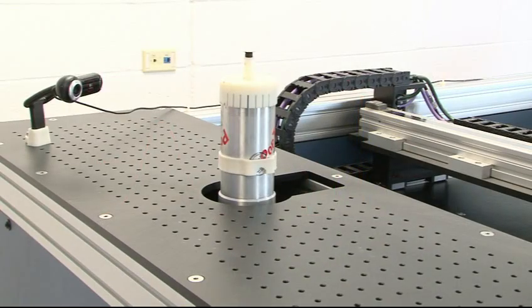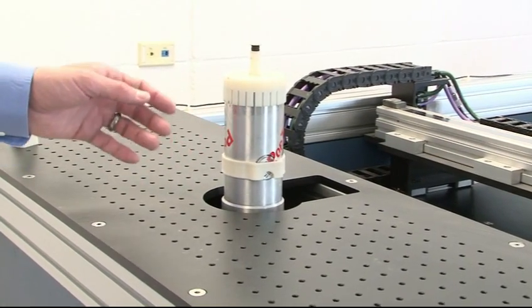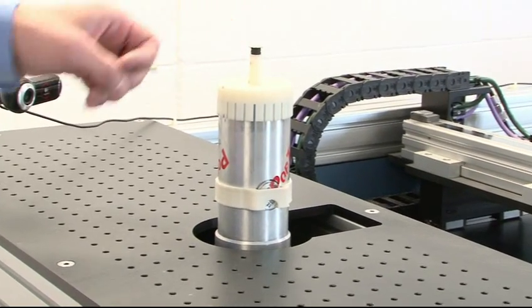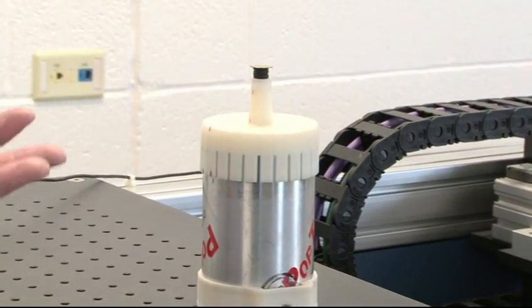This cylindrical device is the gamma detector that receives the signal from the annihilating positrons. This small plastic disk is the positron emitting probe that implants the positrons into the material under test.